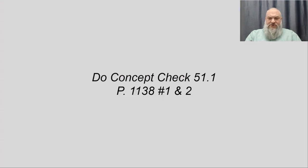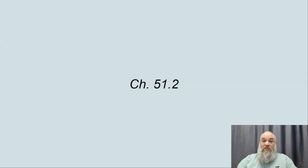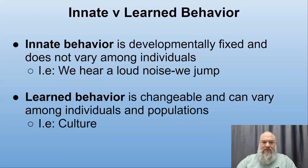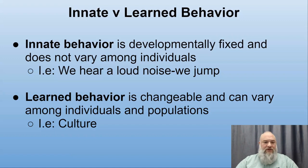If you're not doing this in class, do concept check 51.1 on page 1138, numbers 1 and 2. Next we look at the difference between innate and learned behavior. Innate behavior — like jumping at a loud noise or kicking your leg at the doctor's office — is developmentally fixed and does not vary among individuals. You see the same reaction across the human population.